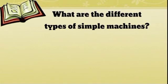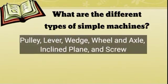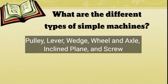Those are the different types of simple machines. What are the different types of simple machines? We have the pulley, lever, wedge, wheel and axle, inclined plane, and screw.